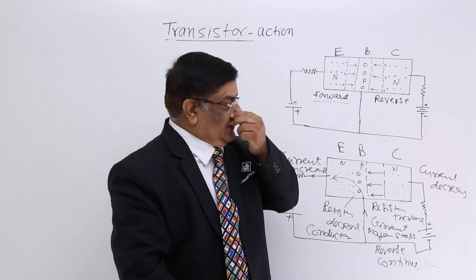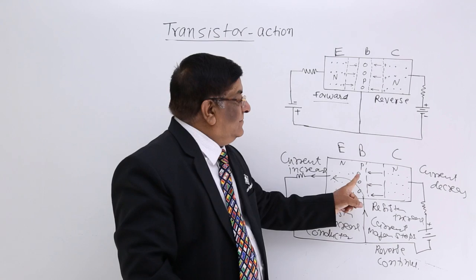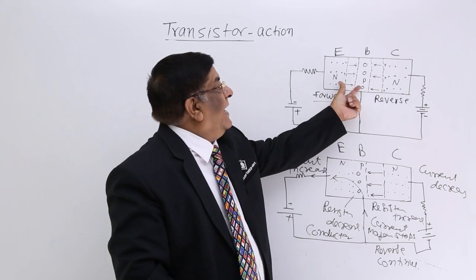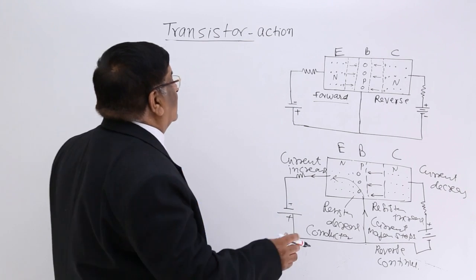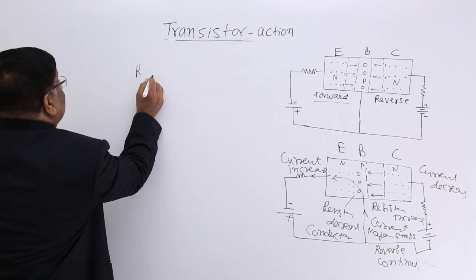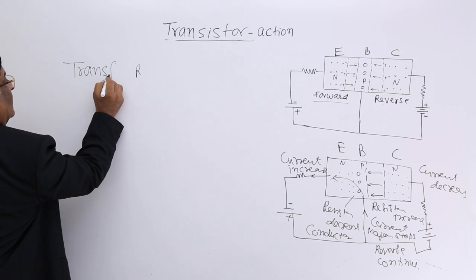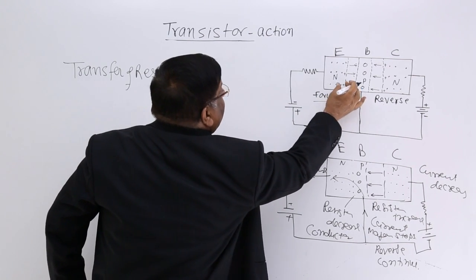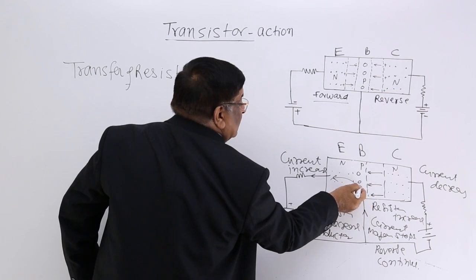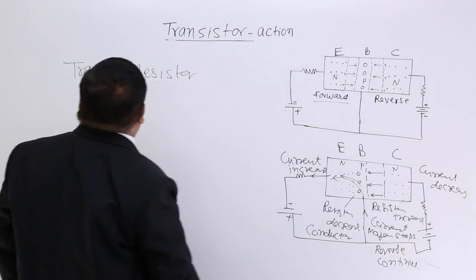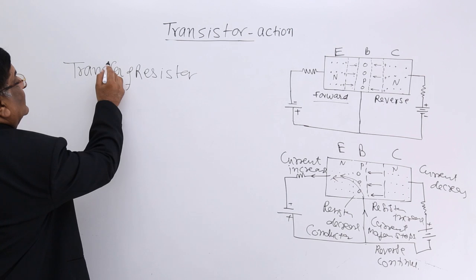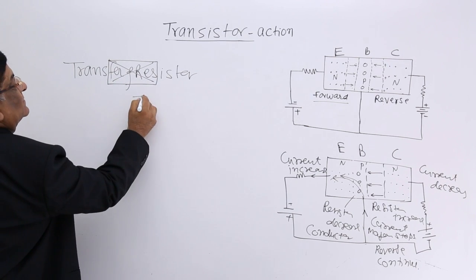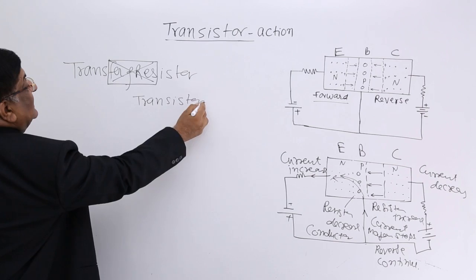What action takes place in the transistor? The resistance from here has transferred here — it has become wider on one side and is no more on the other side. So the action that has taken place is a transfer of resistance. The resistance from the forward-biased junction has transferred to the reverse-biased junction; here it has become a conductor, and here it has become double the resistance.